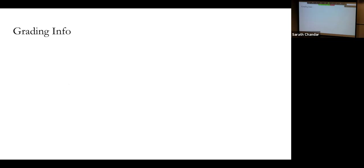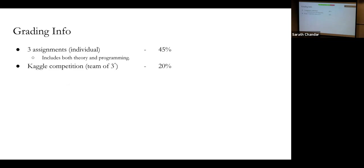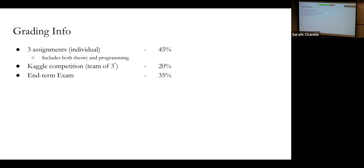For grading: we have three assignments, all individual, which account for 45% of the grade — these include both theory and programming, but it's primarily programming. We also have a Kaggle competition for a team of three over the last month of the course, which is 20% of your grade. Finally, we have a midterm exam worth 35%. So roughly 80% is individual work and 20% is team work. The midterm exam is theory, not programming.